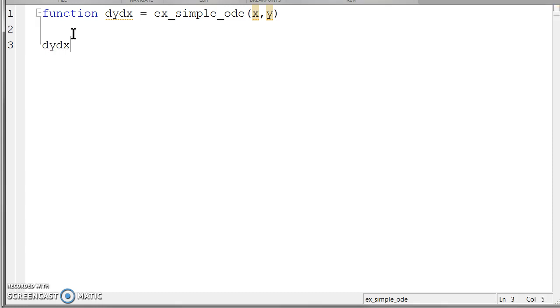And then again, the only thing left to do in this very simple example is to define our ODE equation. Just to make it pretty, I like to put spaces around minus and plus signs and equal signs. So that is what our function looks like. So I went ahead and saved that as ex simple ODE.m in my current folder.